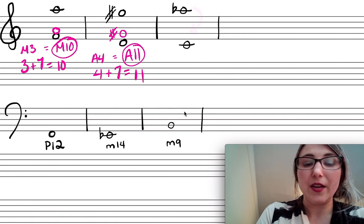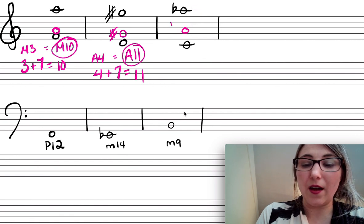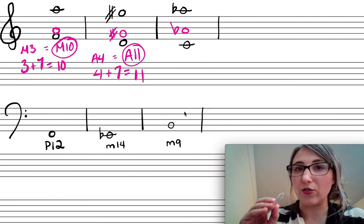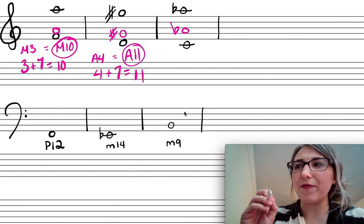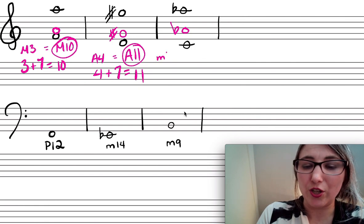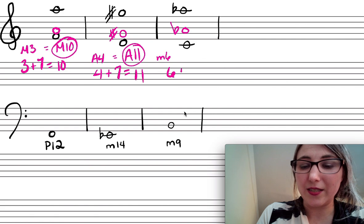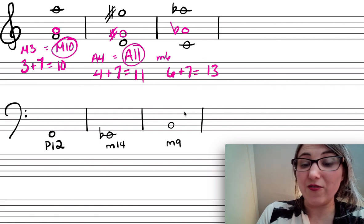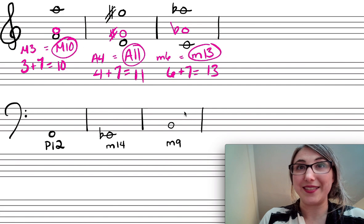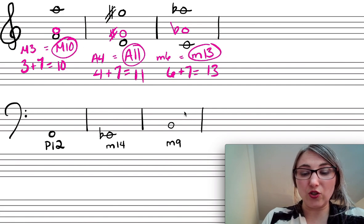One more: I'll move the A-flat down an octave. C up to A is a major sixth, so C up to A-flat is a minor sixth. The simple version is a minor sixth: 6 plus 7 equals 13. Therefore what I have here is a minor 13th — keep the quality the same.